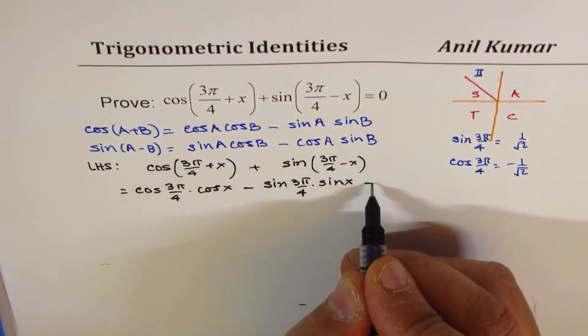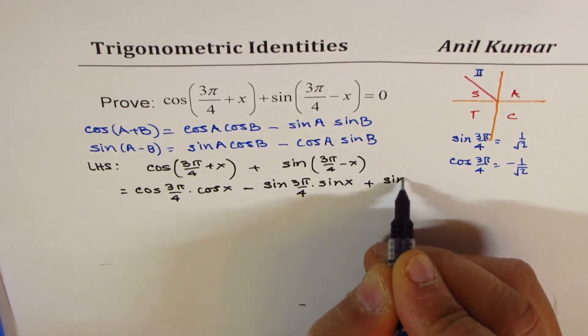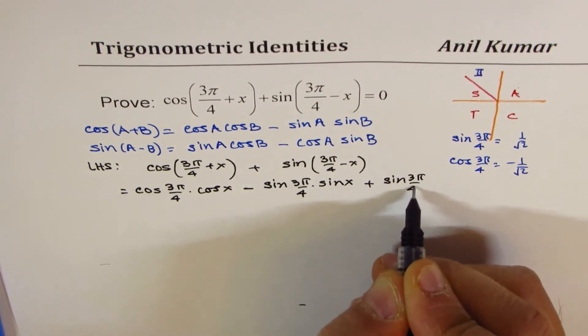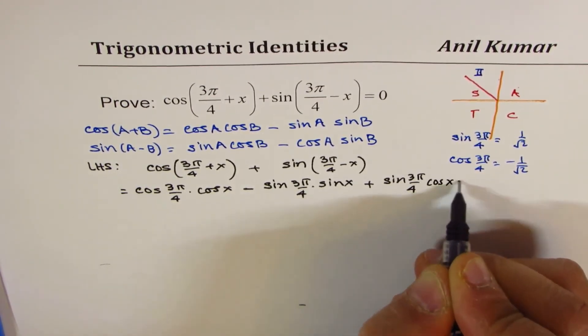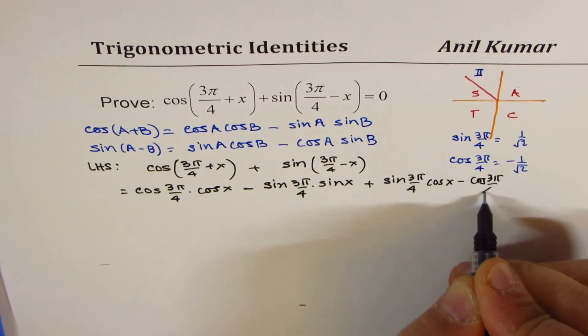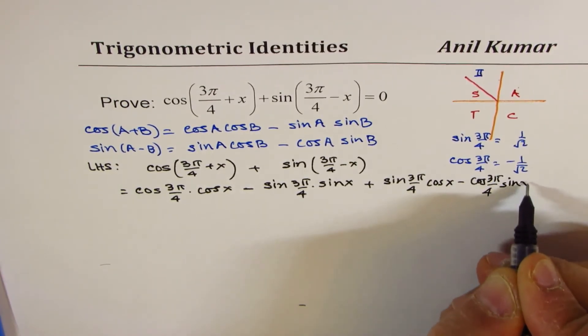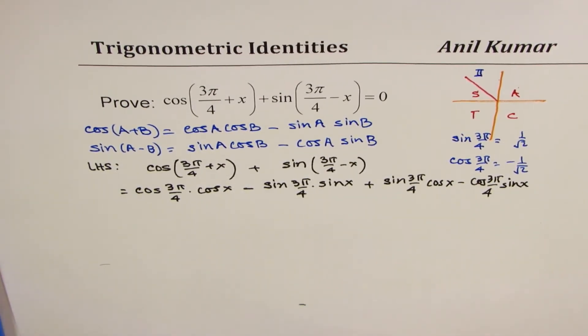And for sin, we have + sin(3π/4)cos(x) - cos(3π/4)sin(x).